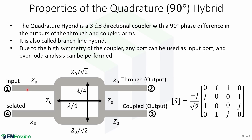For example, with all ports matched, power entering port 1 is evenly divided between ports 2 and 3, with a 90-degree phase shift between these outputs, and no power is coupled to port 4, the isolated port. This is the scattering matrix of the branch-line hybrid. Notice that the symmetry is reflected in the scattering matrix, as each row can be obtained as a transposition of the first row. Given the high symmetry of this coupler, we will perform even and odd mode analysis to analyze it.